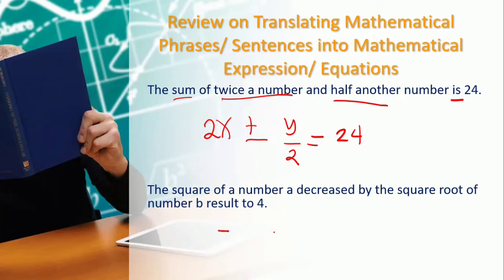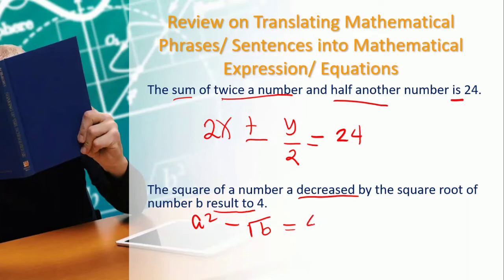Next: the square of a number a, decreased by the square root of number b, the result is 4. 'Decrease by' means subtraction. 'The result' means the equal sign. So we have: a² − √b = 4.